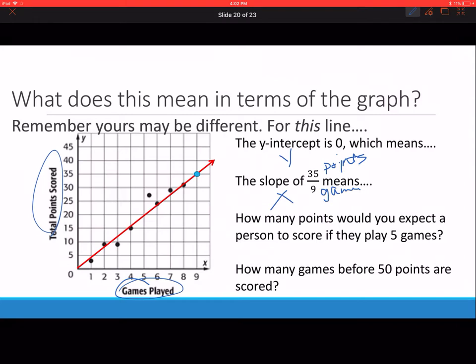How many points would you expect a person to score if they play 5 games? I use y equals 35 ninths x. 5 games, so I'm going to replace my x with 5. y equals 35 times 5 divided by 9, which is 175 over 9.